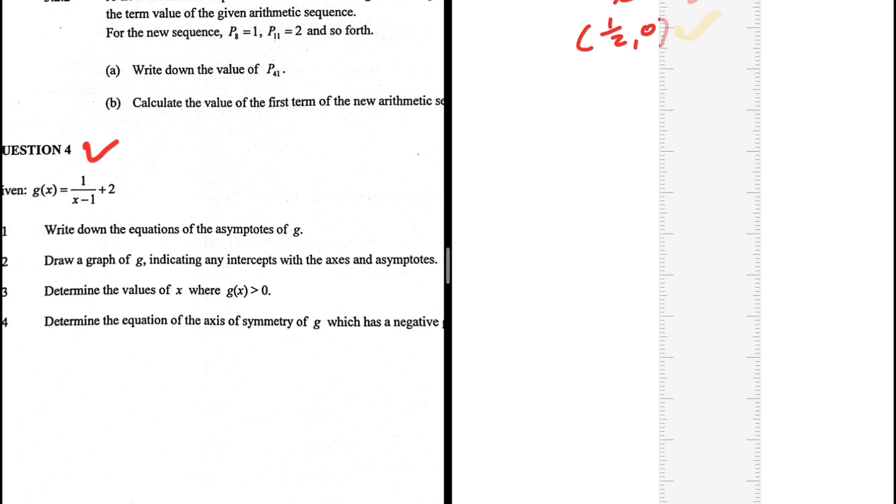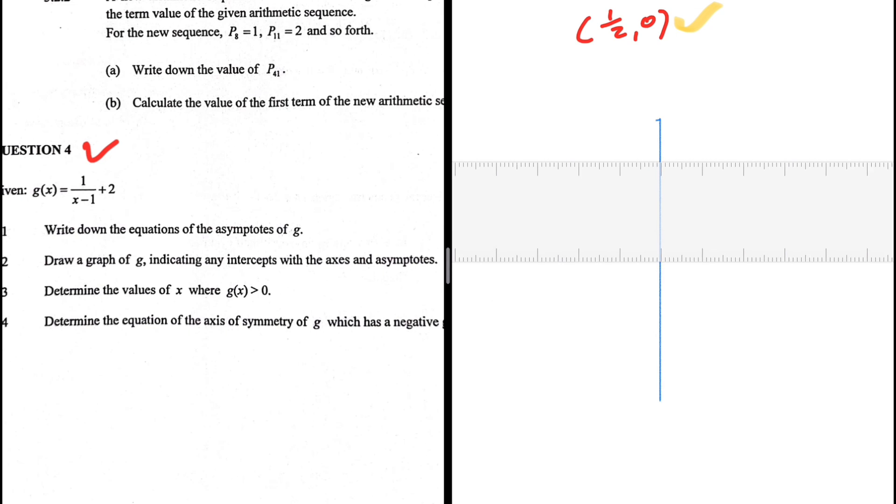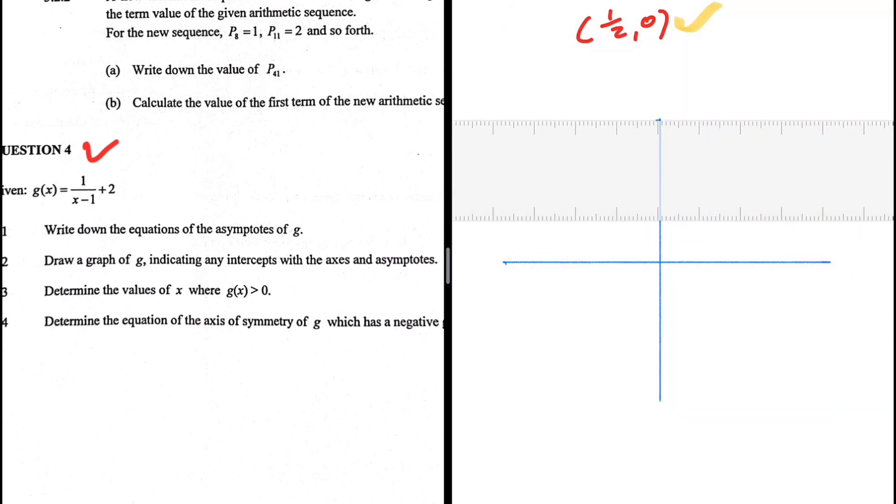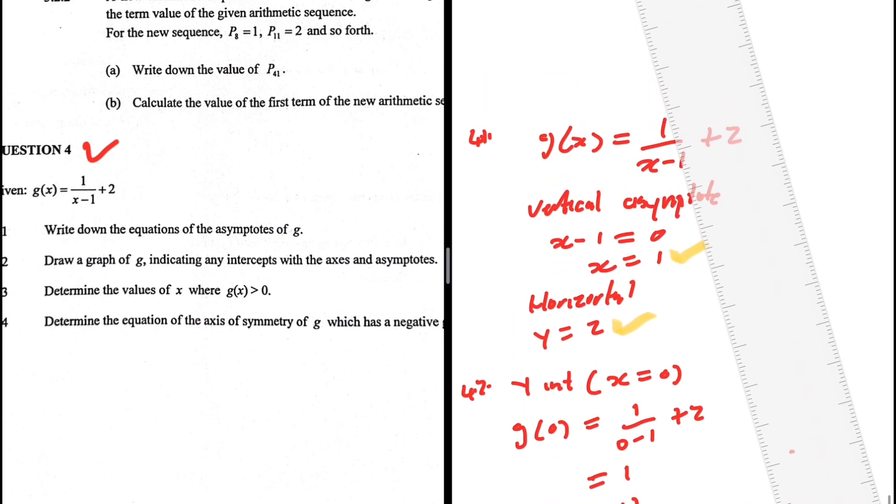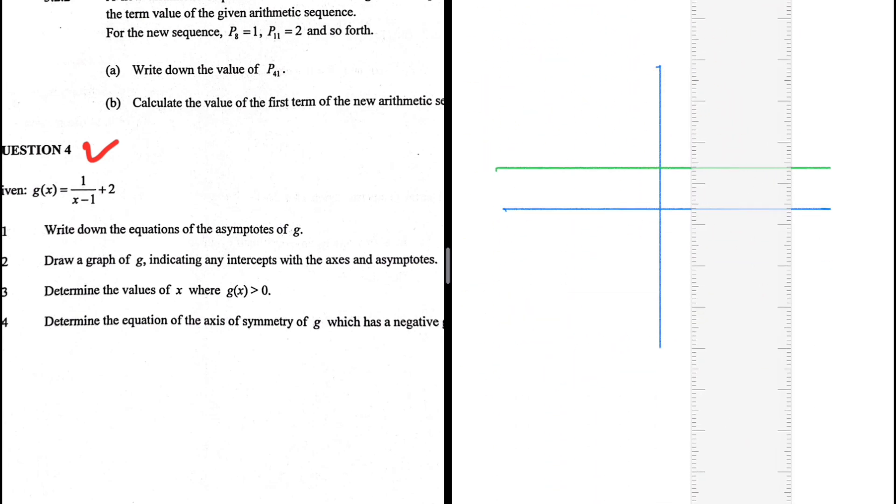So these are our axes. We have the y axis and we have the x axis. We now need to indicate our asymptotes. We have one asymptote at y is equals to 2. So y is equals to 2 somewhere here. And then we have the asymptote, the other asymptote. x is equals to 1. So somewhere here we have the other asymptote. So there we go. We have our asymptotes. Now we need to sketch our graph.